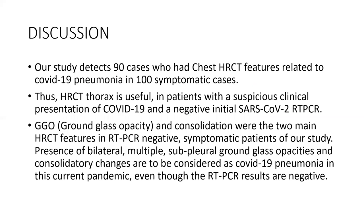Coming to discussion: our study detected 90 cases who had chest HRCT features related to COVID-19 pneumonia among 100 symptomatic cases. Thus, HRCT is useful in patients with a suspicious clinical presentation of COVID-19 pneumonia and a negative initial RT-PCR test. Ground glass opacity and consolidation were the two main HRCT features in RT-PCR negative symptomatic patients. Bilateral multiple subpleural ground glass opacities and consolidatory changes should be considered as COVID-19 pneumonia even with negative RT-PCR results.